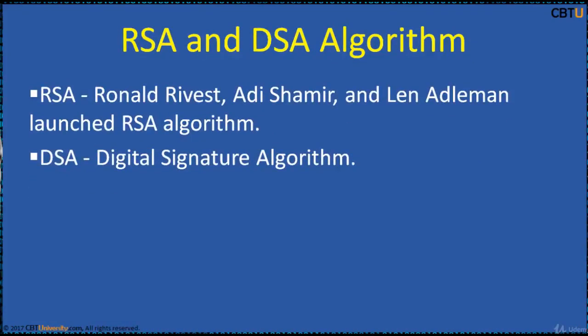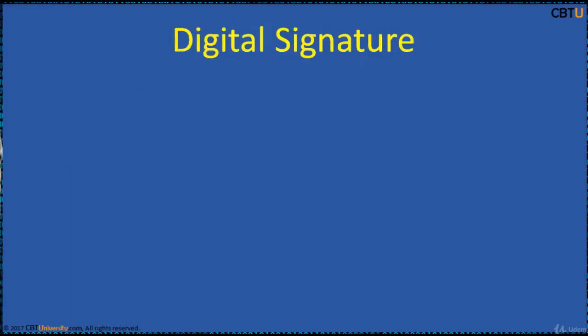Adi Shamir, Ron Rivest, and Leonard Adleman launched the RSA algorithm. RSA provides digital signatures, encryption, and key exchange. DSA, the Digital Signature Algorithm, provides digital signatures but does not provide key exchange or encryption. Both RSA and DSA are based on public key infrastructure, using private and public keys — private keys on the sender's side and public keys on the receiver's side.